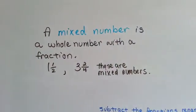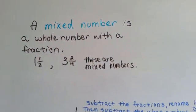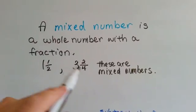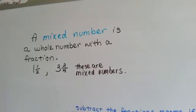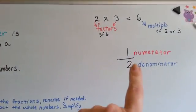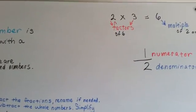Remember a mixed number is a whole number with a fraction, like one and a half or three and two fourths. Each one of these are mixed numbers. It's a whole number with a fraction next to it. Remember that a numerator is on the top of the fraction and the denominator is on the bottom of the fraction.